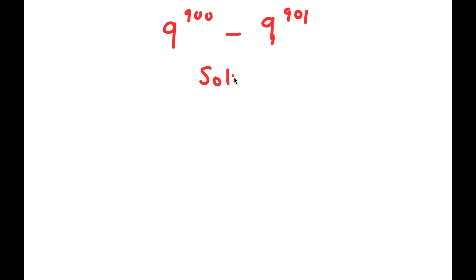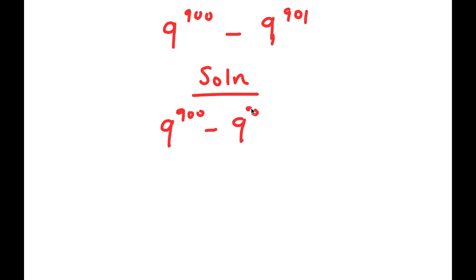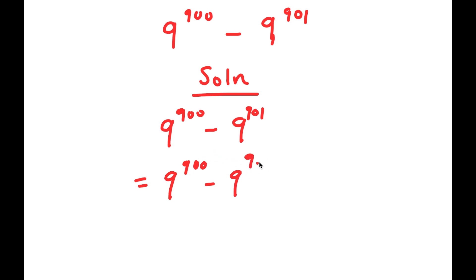For my solution, let me first rewrite my problem down here so I have a little more solving room. What I'm first going to do is rewrite my exponent nine hundred and one as nine hundred plus one. So I have nine to the power of nine hundred minus nine to the power of nine hundred plus one.